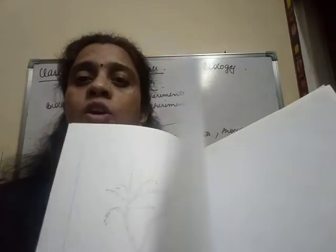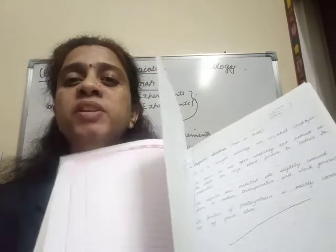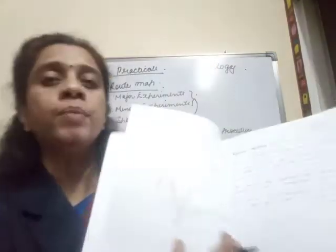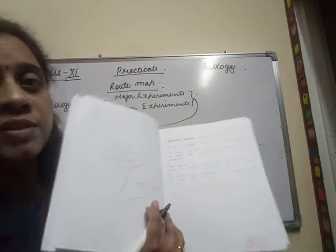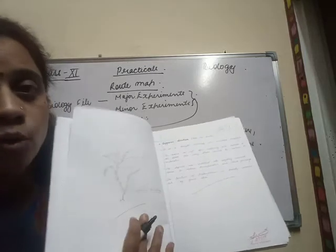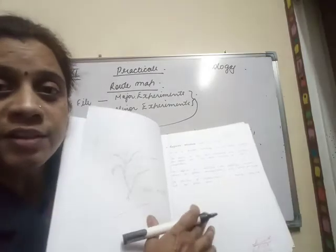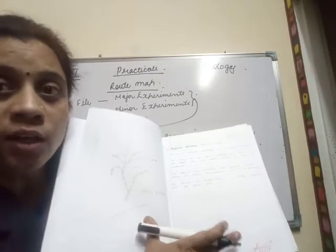So you have ruled sheets and blank sheets arranged this way: on the left-hand side you have to make blank sheets, and on the right-hand side you have to make ruled sheets.